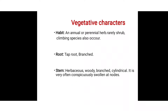First is the vegetative character. The habitat was already discussed. The second one is habit: there are annual or perennial herbs, rarely shrubs, and climbing species also occur. Polygonaceae is a family where most plants are herbs, shrubs, or climbers — both annual and perennial. Annual means the whole life cycle is completed in one year. Perennial means the life cycle continues into a second year without resting.